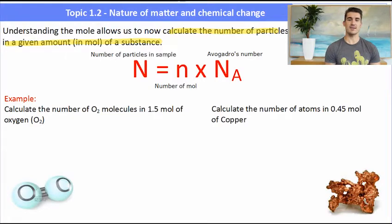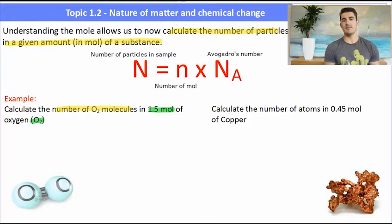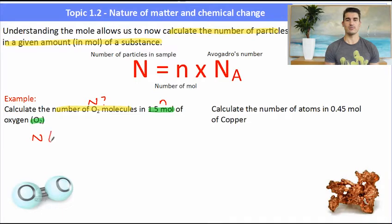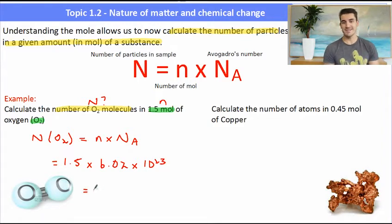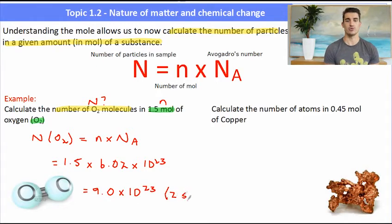Calculate the number of O₂ molecules in 1.5 mole of oxygen. The number of O₂ molecules means find big N. They've given us an amount in moles, so that's little n. Big N(O₂) equals n times Nₐ. The number of moles was 1.5, which has two significant figures, multiplied by Avogadro's number with three significant figures. When multiplying, we take the least number of significant figures, giving 9.0 times 10 to the 23 — accurate to two significant figures. Keep numbers in your calculator and round at the very end.